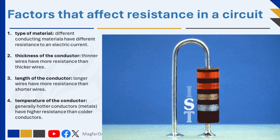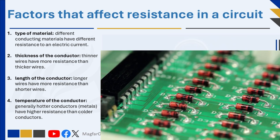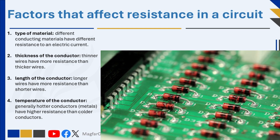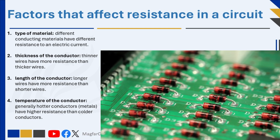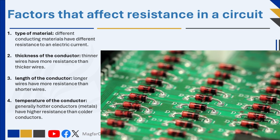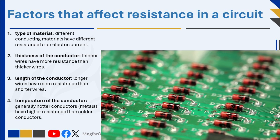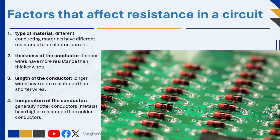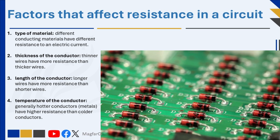The resistance of a conductor is not always the same — it can change depending on certain factors. These factors affect how easily electric current can flow through the material. Understanding what influences resistance helps us design circuits that work safely and efficiently. There are four main factors that affect resistance: the type of material, the length, the thickness of the conductor, and its temperature.